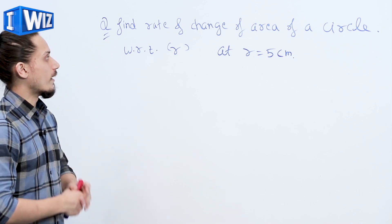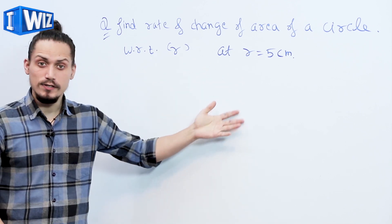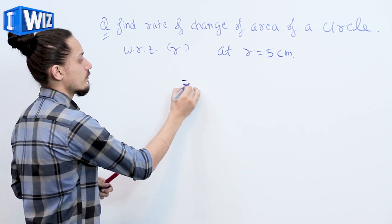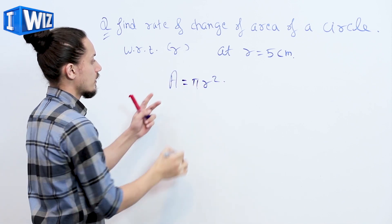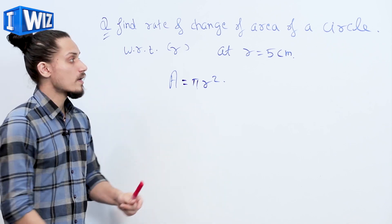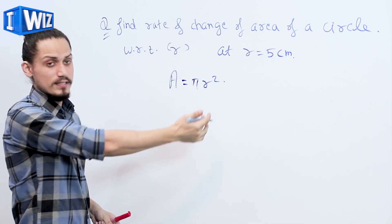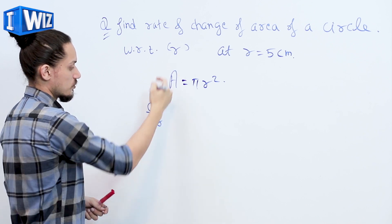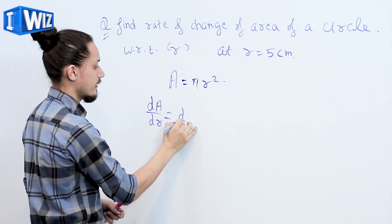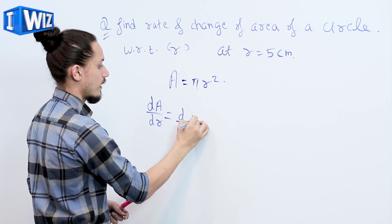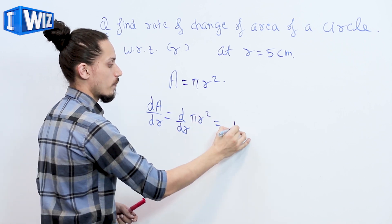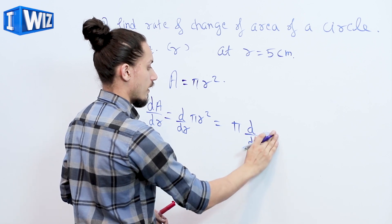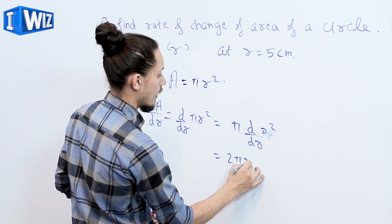In this example, we have to find the rate of change of area of a circle with respect to r. We know the area of a circle is given as A equals pi r squared. So dA/dr with respect to r will be equal to d/dr of pi r squared, which equals pi times d/dr of r squared.